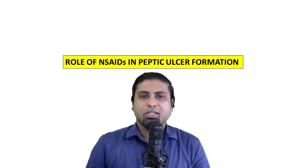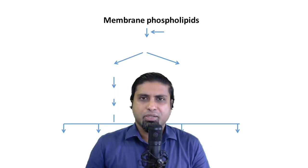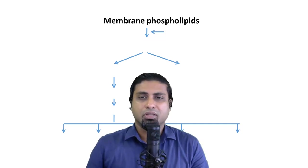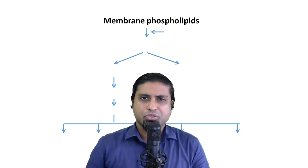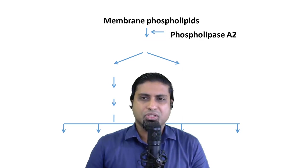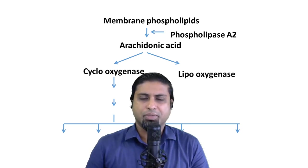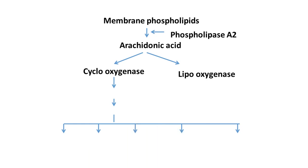Regarding the role of non-steroidal anti-inflammatory drugs in peptic ulcer formation: cell membranes contain phospholipids. In situations such as viral or bacterial infection, cell membranes get damaged, exposing membrane phospholipids to enzymes such as phospholipase A2, resulting in the formation of arachidonic acid. Arachidonic acid may be acted upon by cyclooxygenase enzyme or lipoxygenase enzyme. Cyclooxygenase acts upon arachidonic acid and converts it into various prostaglandins, which are pro-inflammatory in nature.